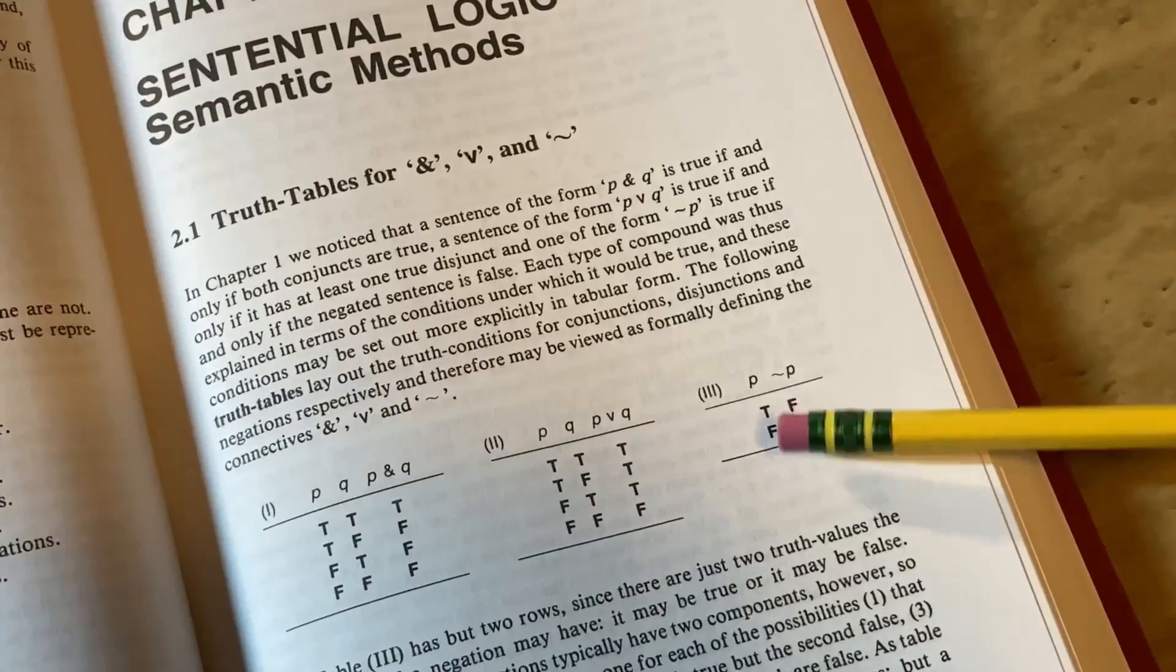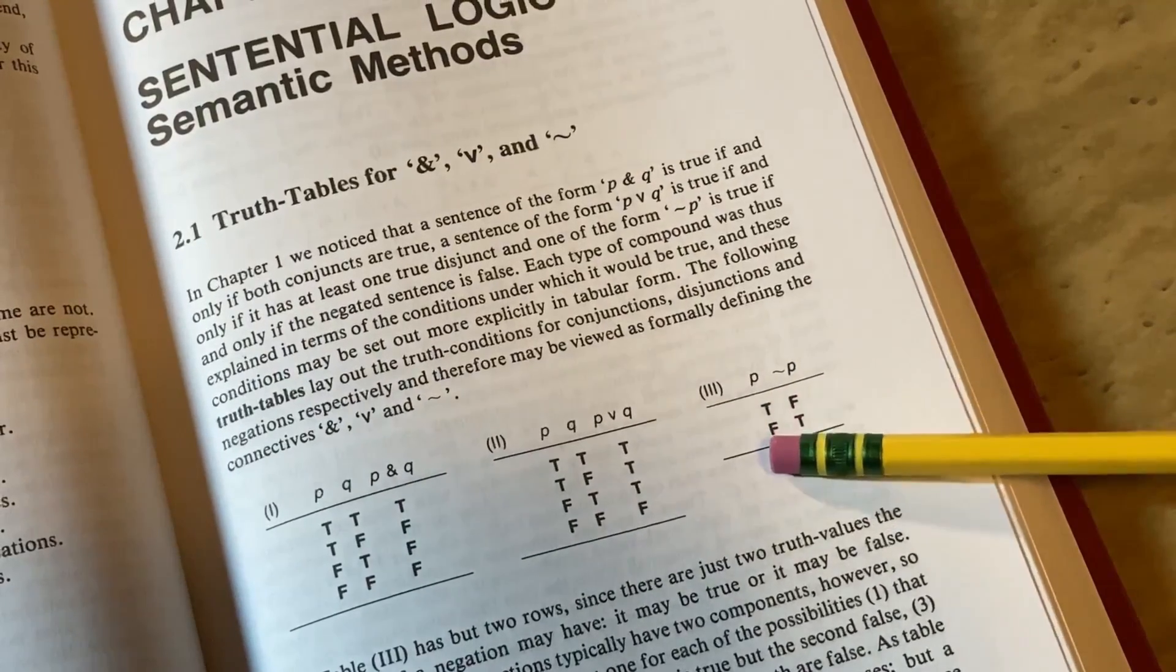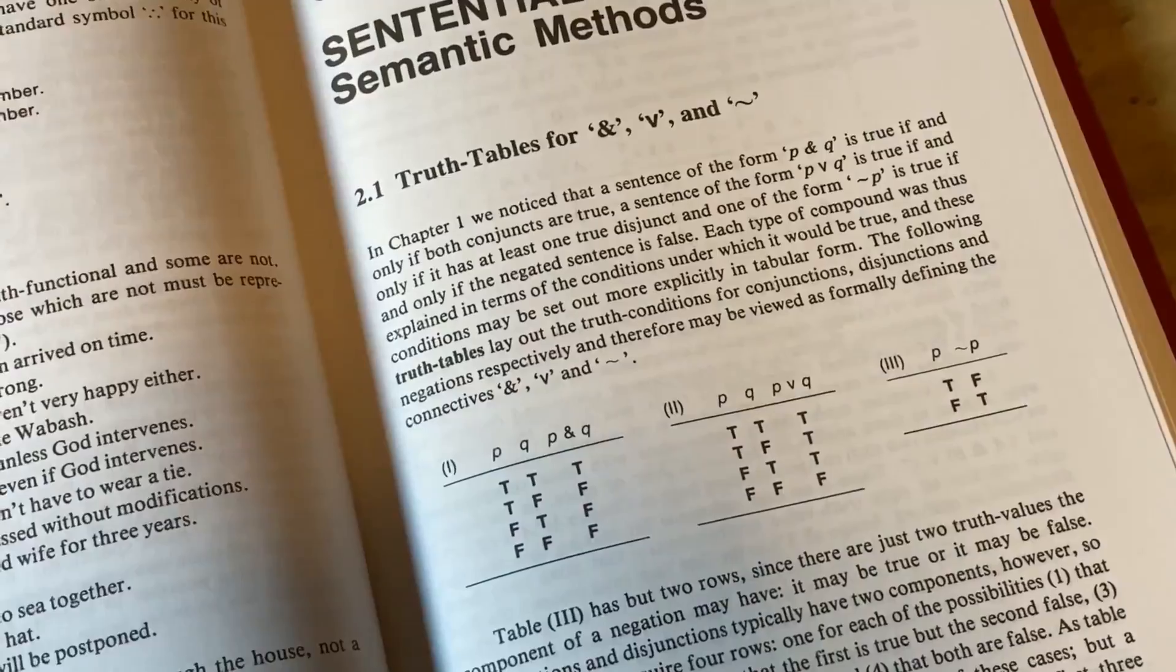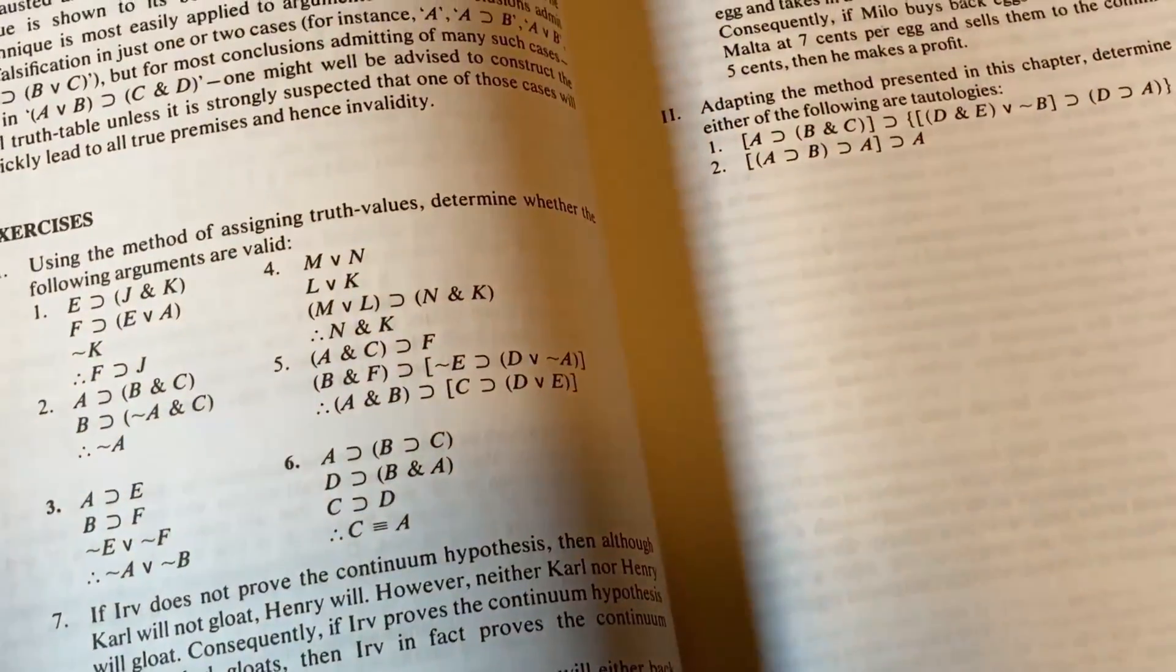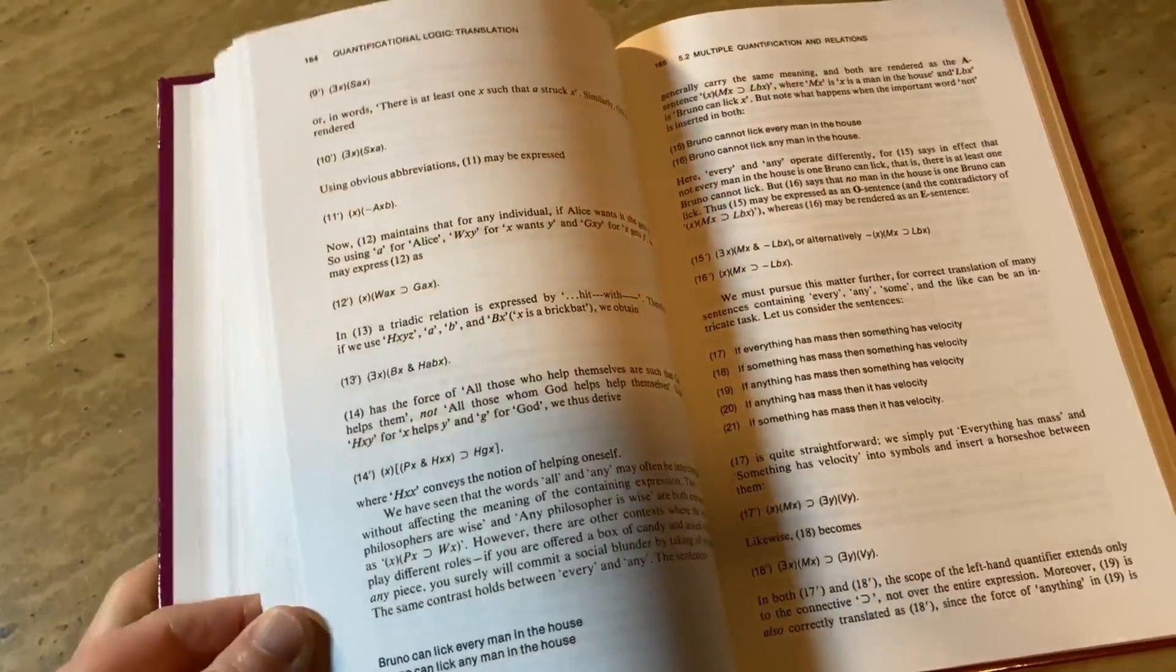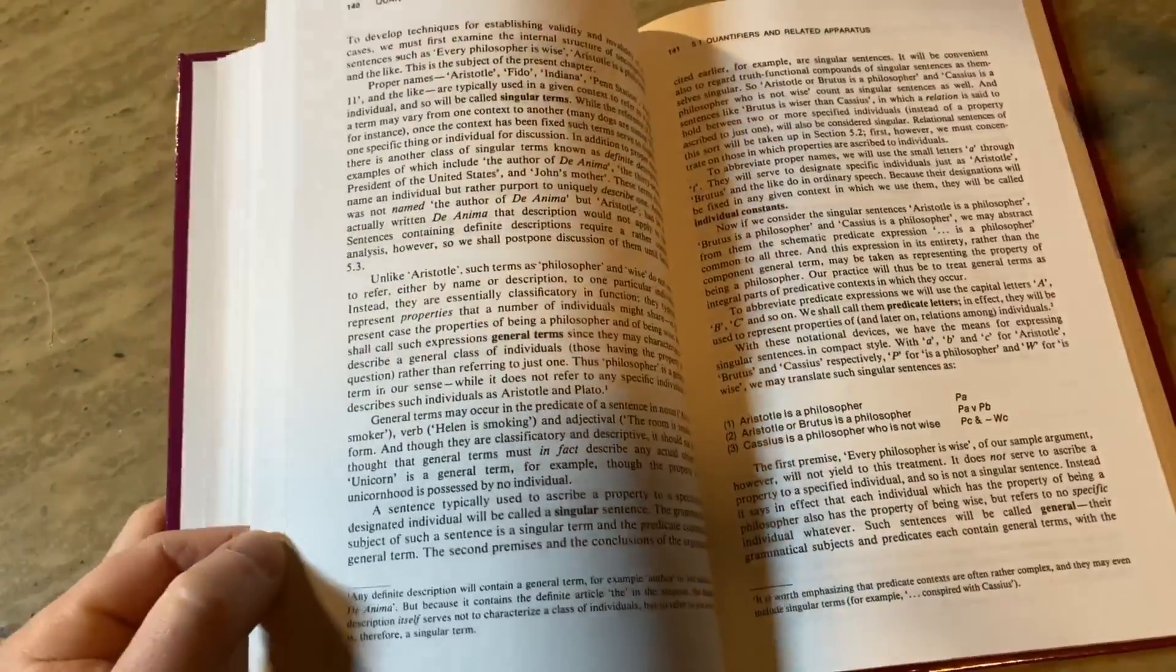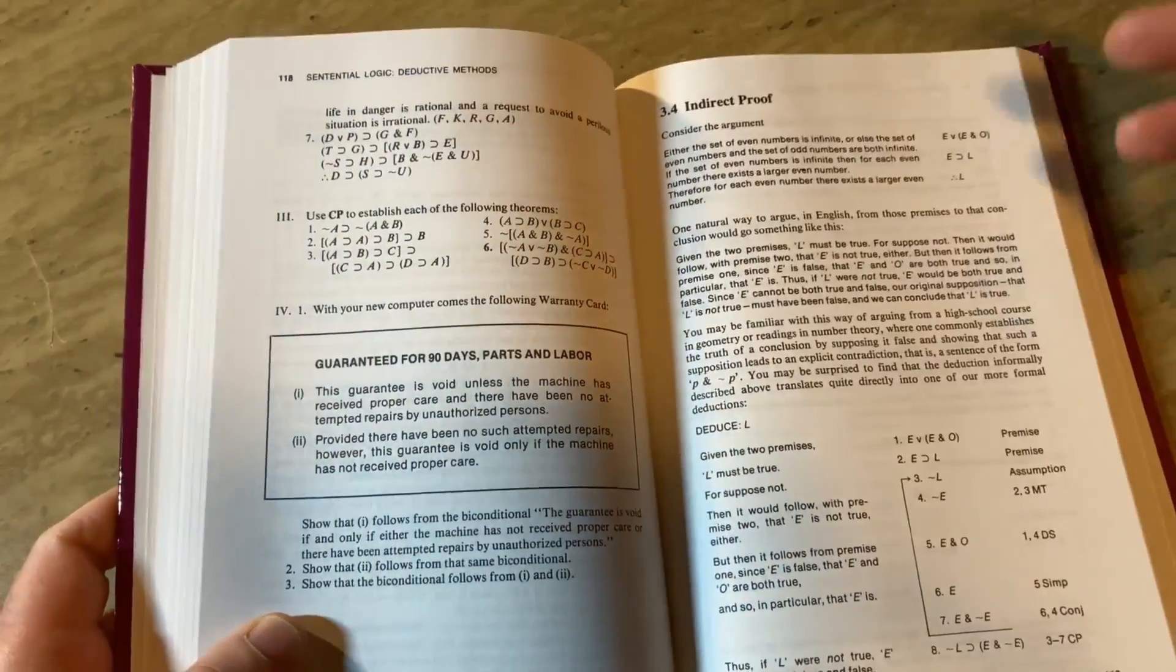And then here's the negation. So if P is true, then not P is false. If P is false, then not P is true. So things that you see in most logic books and things that are important. And I just wanted to show you this book because I know a lot of people have been requesting a book on logic. I don't think I have many videos on books on logic.